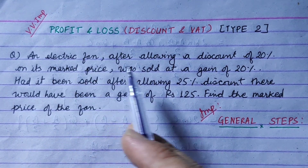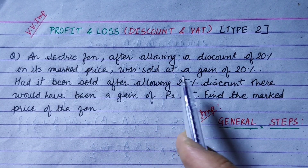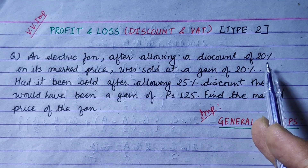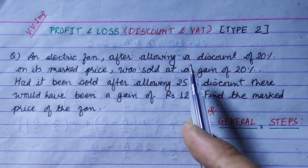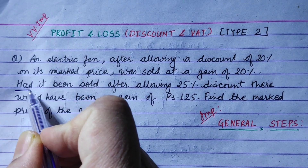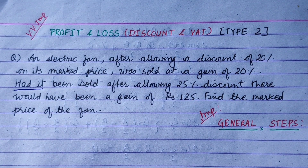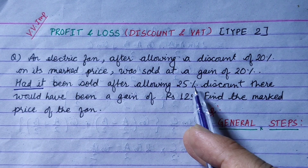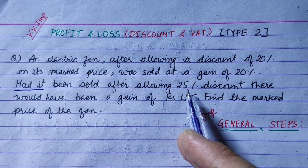An electric fan after allowing a discount of 20% on its mark price was sold at a gain of 20%. The first condition: 20% discount on mark price with 20% gain. The second condition: had it been sold after allowing a 25% discount — in the first case 20%, in the second case 25% discount.